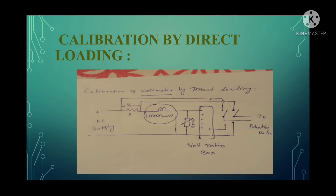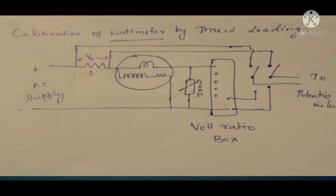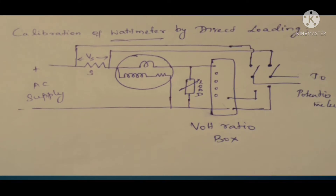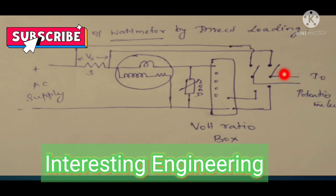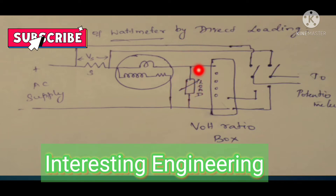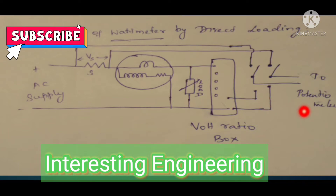First we shall see about the direct loading method of calibration of wattmeter. This is the circuit arrangement for calibrating a wattmeter using the direct loading method, where we connect a load across the wattmeter based on the power rating of the wattmeter. A variable load is connected here, and this variable load carries the current, consuming some amount of the supply provided. By means of connecting a standard resistor, the current entering the circuit is measured using a potentiometer, and the voltage drop across this load is also measured using a potentiometer arrangement.